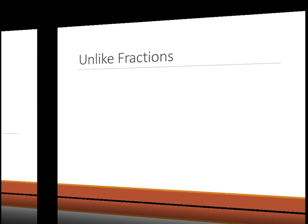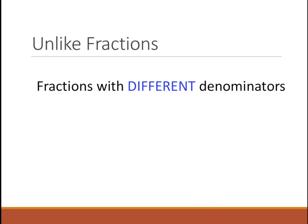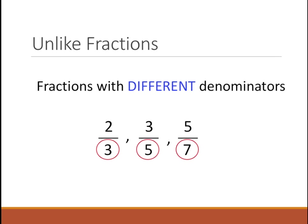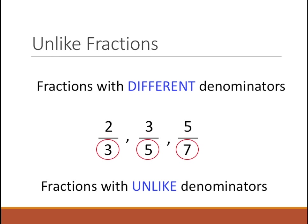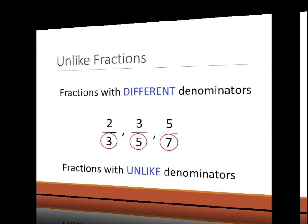Now let's come to unlike fractions. What are unlike fractions? These are fractions with different denominators. Let's say we have 2 by 3, 3 by 5, and 5 by 7. The denominators 3, 5, and 7 are obviously very different from each other, so they are called unlike denominators.